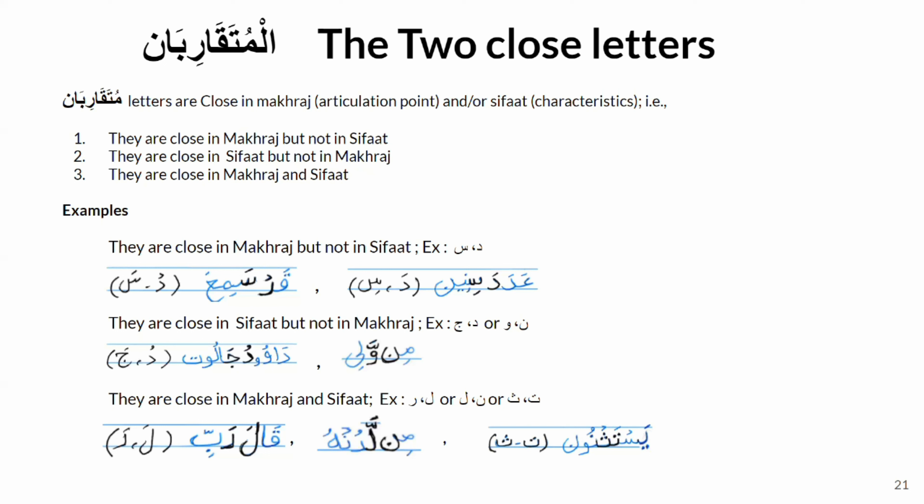Mutaqariban letters are two close letters, and there are three ways that make two letters mutaqariban letters. The first is if they are close in makhraj but not in sifat. The second is when they are close in sifat but not in makhraj. The third is when they are close in both makhraj and sifat. Let's see some examples of the first way.